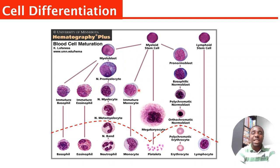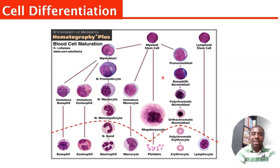These immature cells can be in the bone marrow during cell differentiation, but they should not be in the blood. What we expect to be in the blood are the mature cells. So if for any reason you see any of the immature cells, it indicates abnormalities. These are some of the things we are going to be sharing.